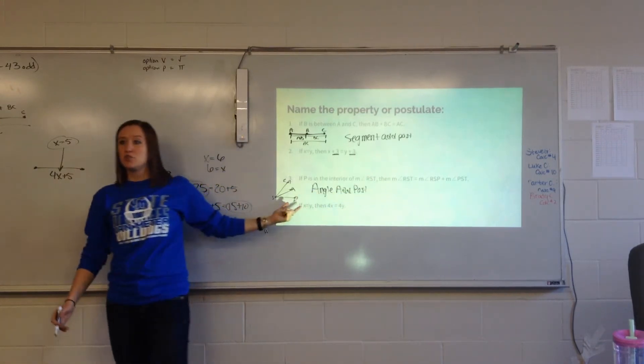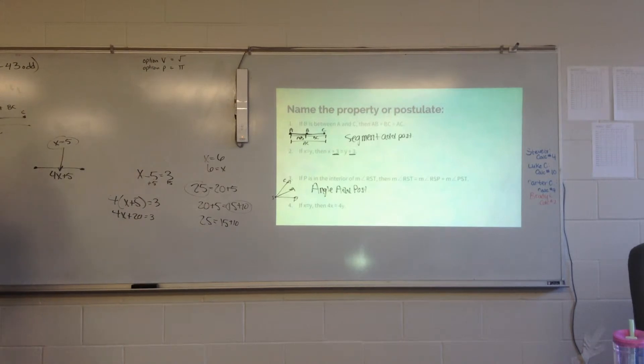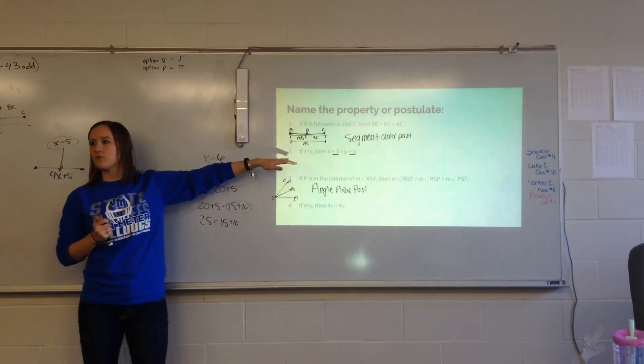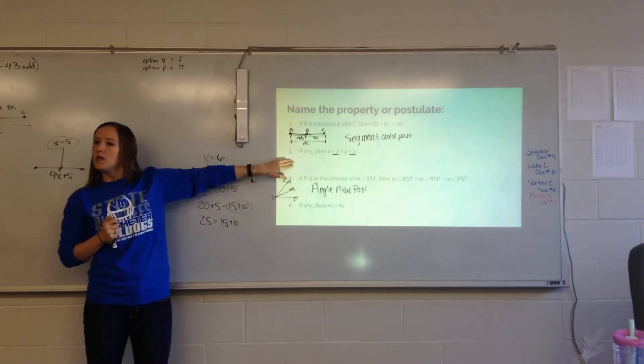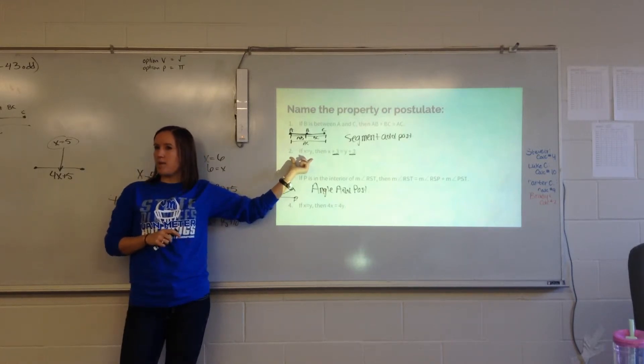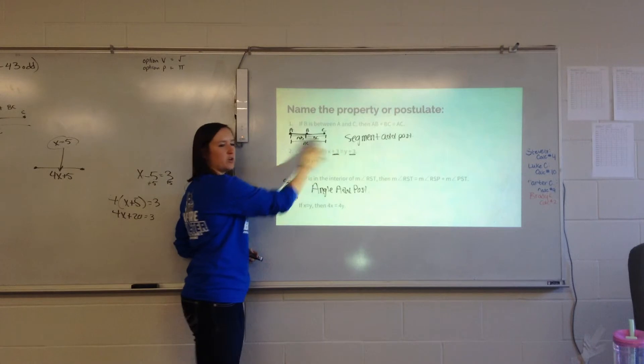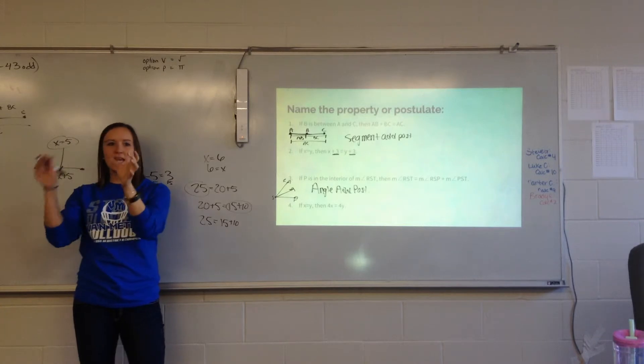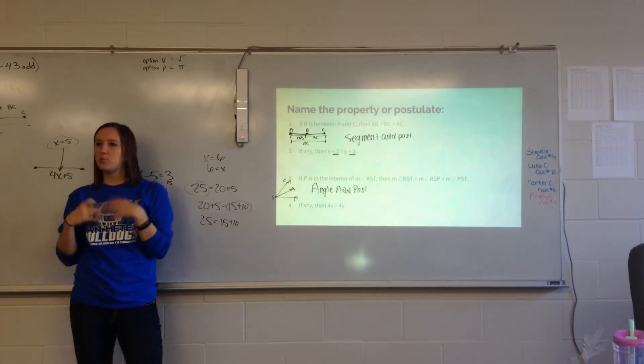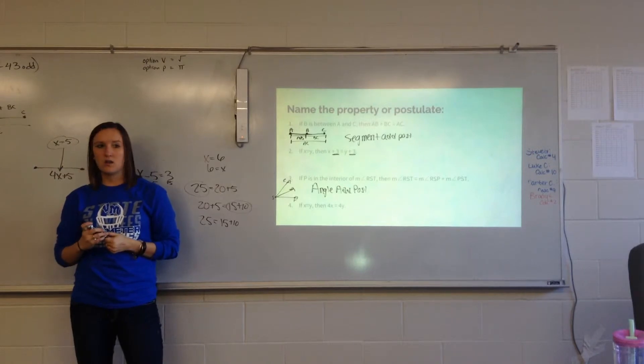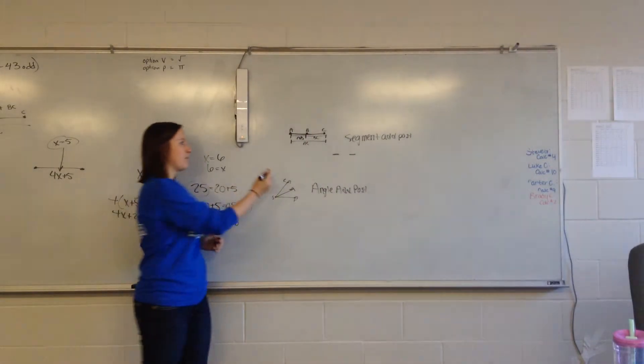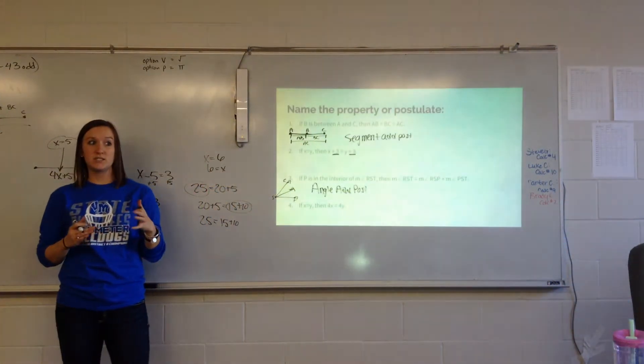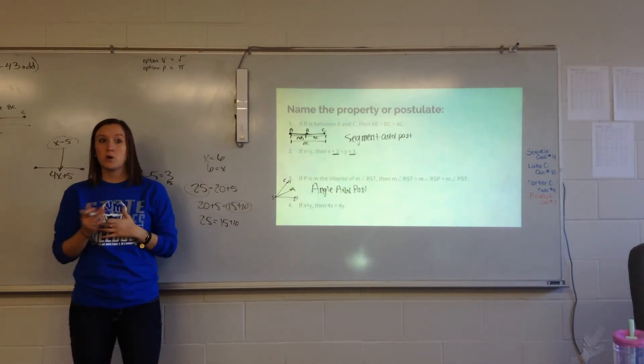It gives it away in it. Take it piece by piece. If it helps you to draw the picture, draw a picture so you know. Now, look at number two. If I'm given x equals y, what am I doing on both sides of the equation over here? I'm adding three, right? So if I'm adding a number to both sides of the equation, which property is that? Addition property. Addition property of equality.